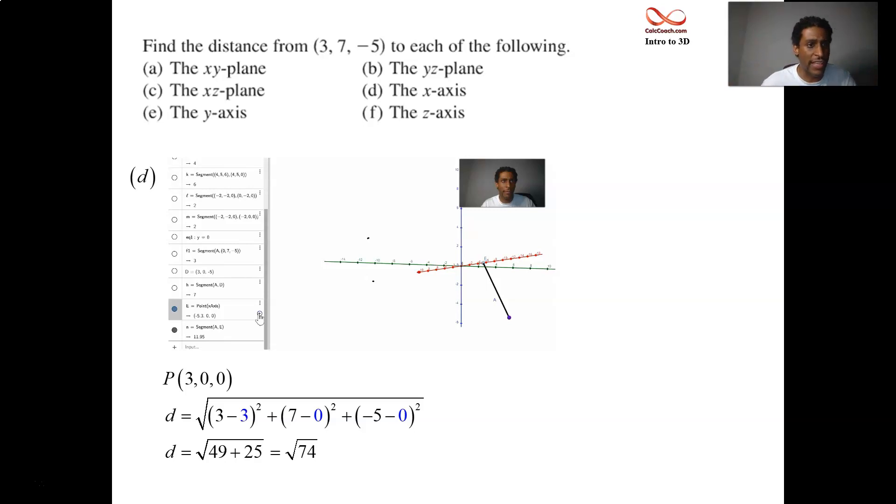So what you're doing is basically zeroing out the other two and finding how far you are away from the point with the other two coordinates equal to 0. So when you move on to letter E, when they ask about the y-axis, zero out x and zero out z, and you'll have 7. You're trying to figure out how far are you away from (0, 7, 0). It turns out that 3 squared and 0 squared and 5 squared, so 9 and 25, 34, square root of 34.